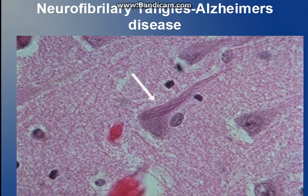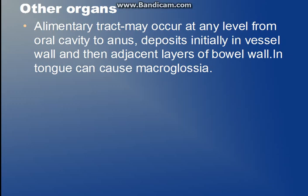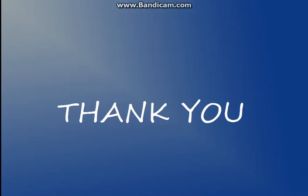This picture shows neurofibrillary tangles in Alzheimer's disease. Other organs can also be involved, like the alimentary canal from the oral cavity to the anus — the deposits are initially present in the vessel wall and then extend to the layers of the bowel wall. A very important finding in amyloidosis is macroglossia: the tongue is increased in size. This is also asked as a postgraduate question. Thank you for watching — please like and subscribe.